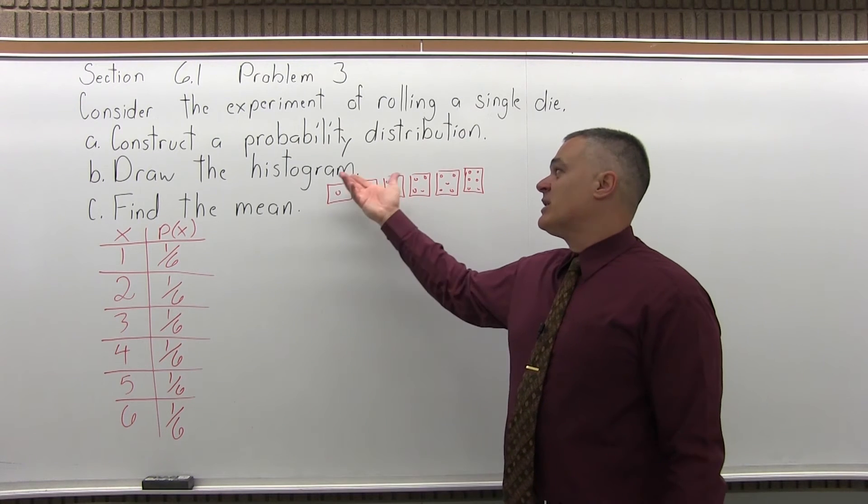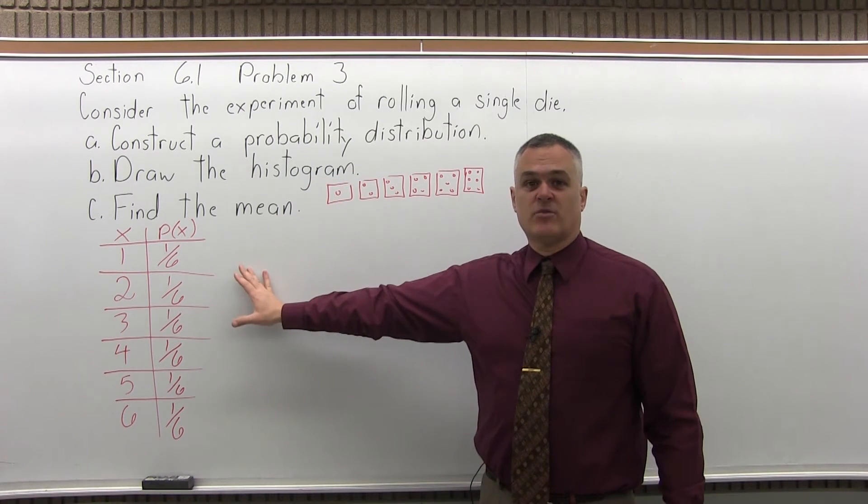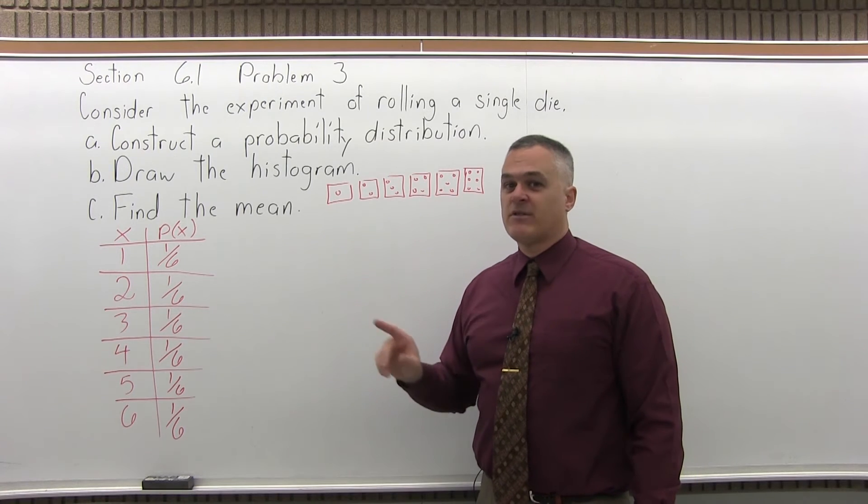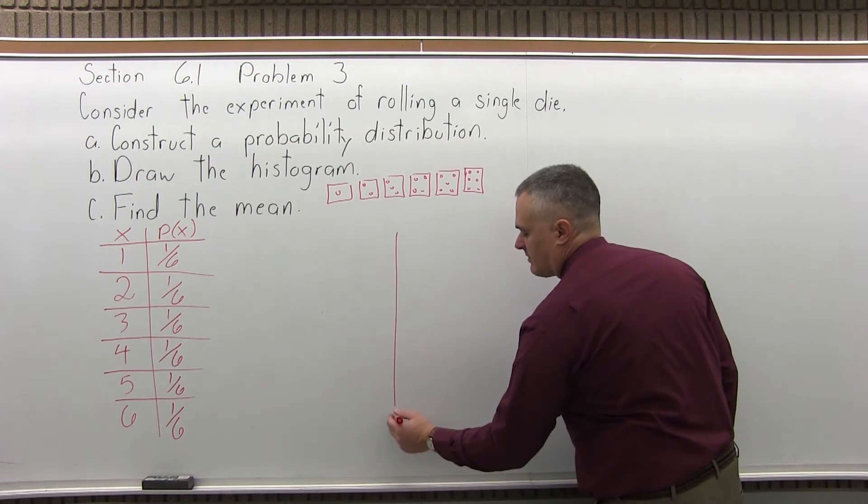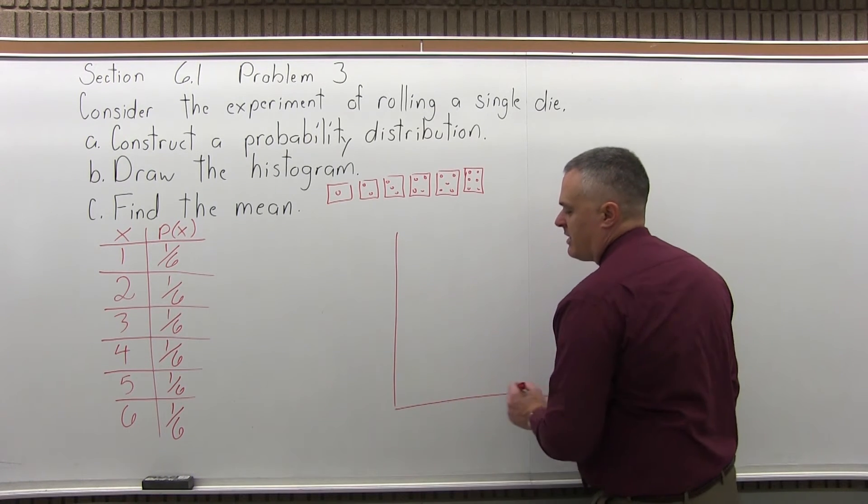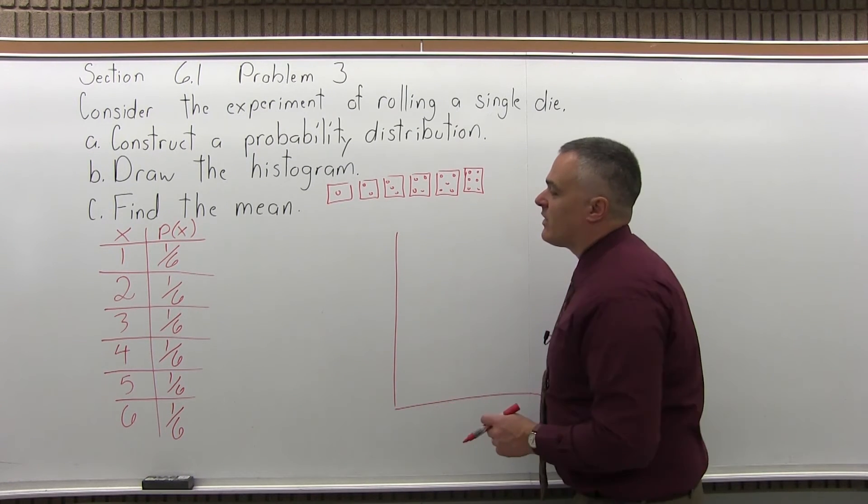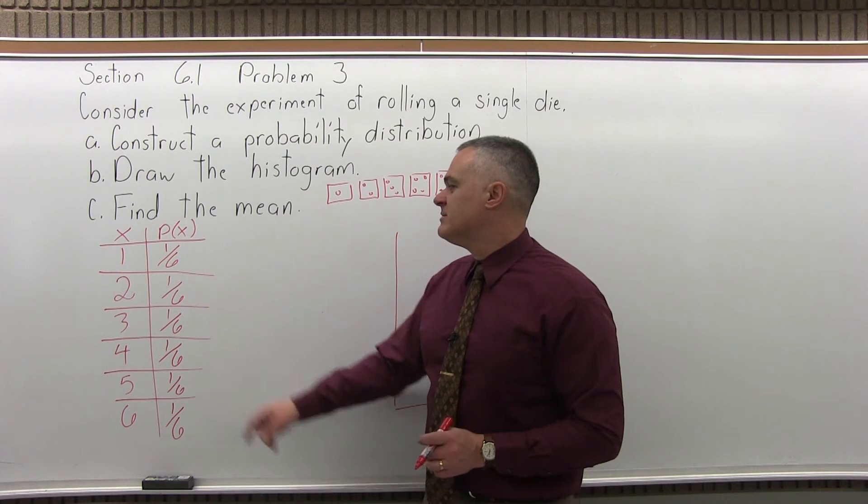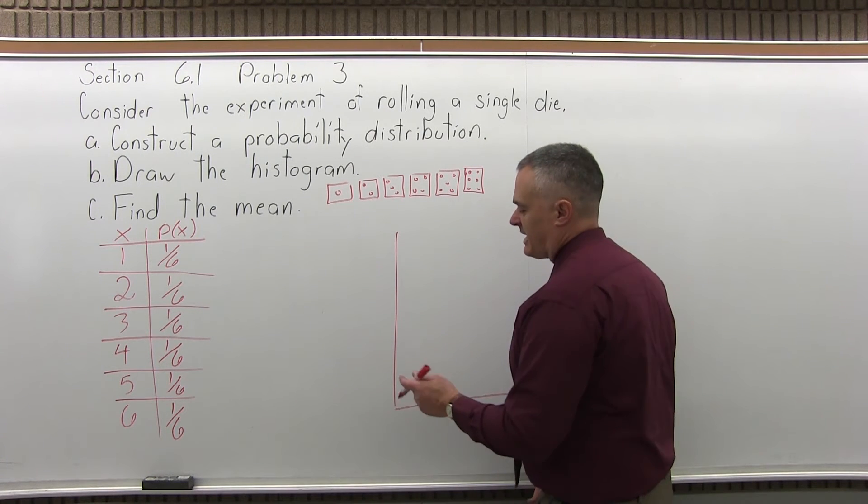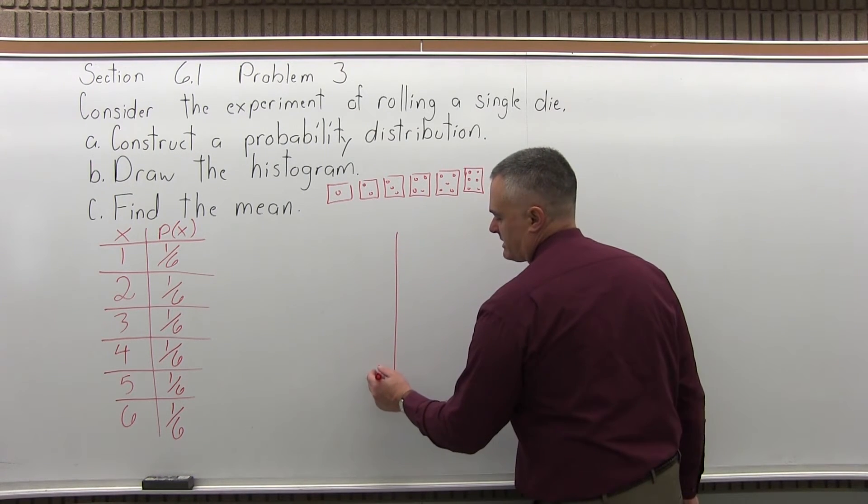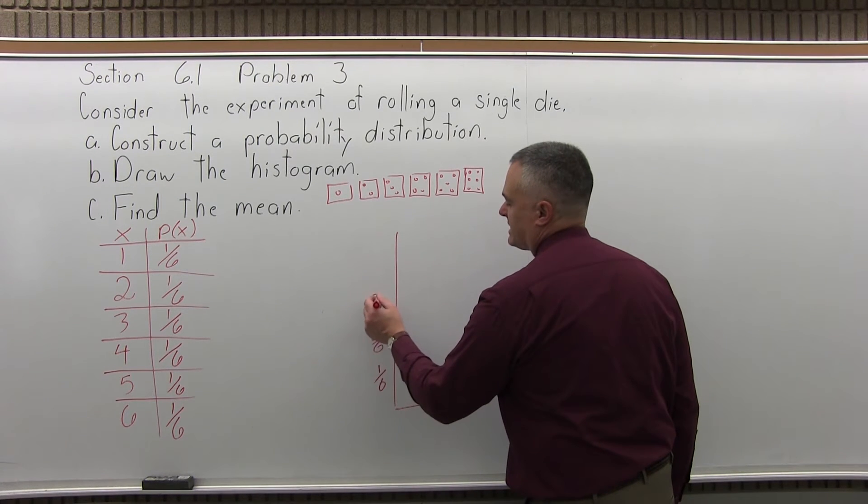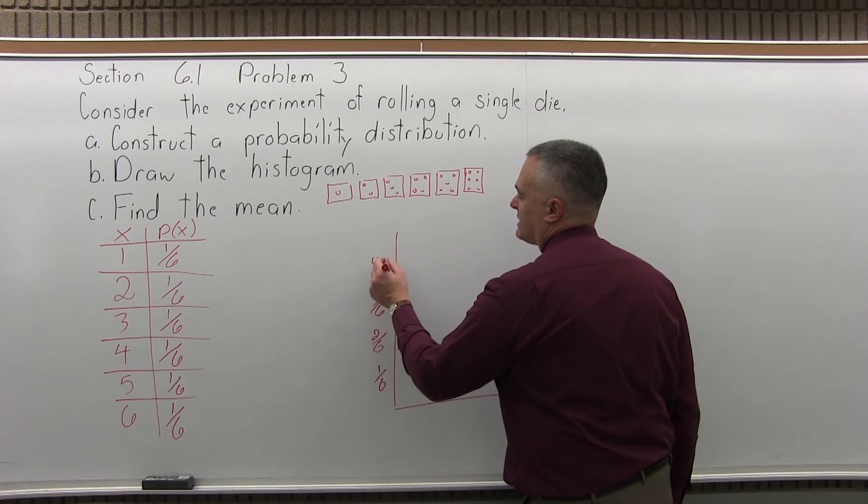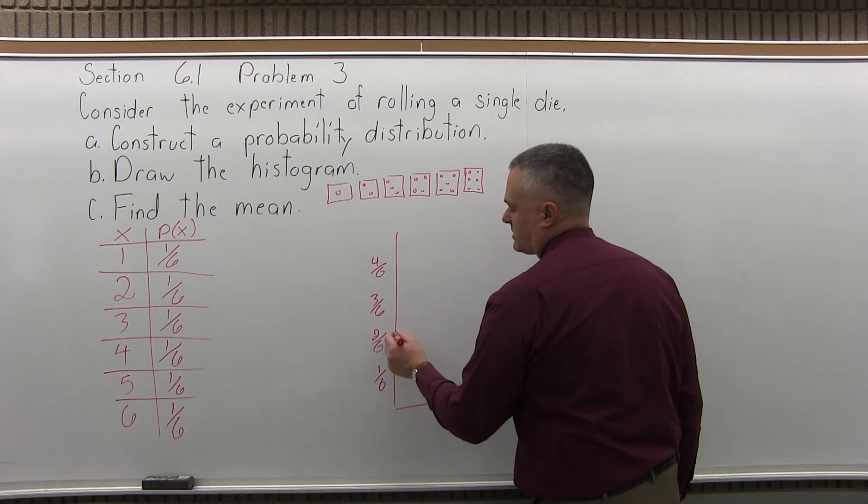So B, draw the histogram. Now a histogram is a special bar graph for a probability distribution. The bars will have to be vertical, they'll have to touch. So let's make a bar graph. For our probability up the side here we can have 1 over 6, 2 over 6, 3 over 6, 4 over 6. You could label it with decimals also.